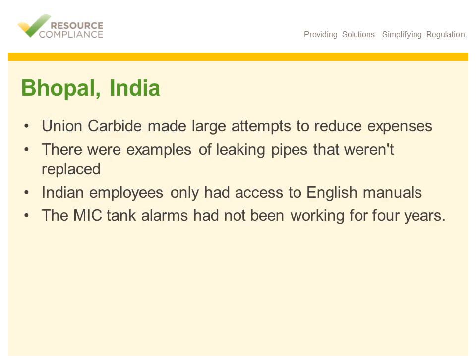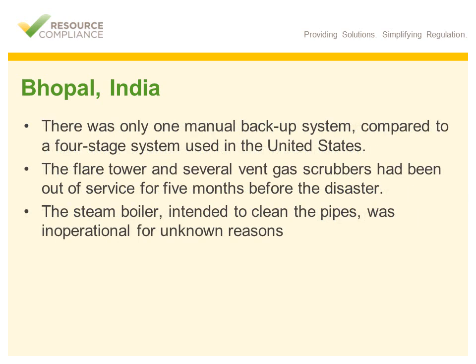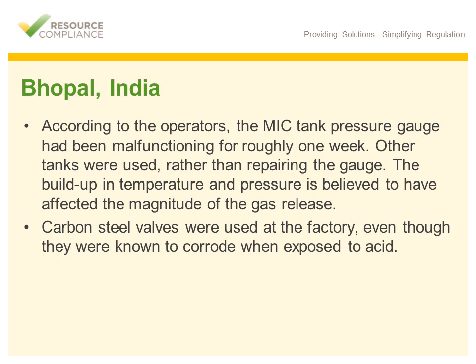Here is a listing of some other contributing factors. Union Carbide had made large attempts to reduce expense, including cutting back training and plant maintenance. Investigation determined there were leaking pipes not replaced even though management knew about them. For some process equipment, manuals were only available in English even though the majority of employees did not read English. Union Carbide only had one manual backup system compared to the four-stage system used in the United States. The flare tower and several vent gas scrubbers had been out of service for five months before the disaster. The steam boiler intended to clean the pipes was inoperational. The MIC tank pressure gauge had been malfunctioning for roughly one week, so other tanks were used rather than repairing the gauge. The buildup in temperature and pressure is believed to have affected the magnitude of the gas release. Additionally, carbon steel valves were used at the factory even though they were known to corrode when exposed to acid.